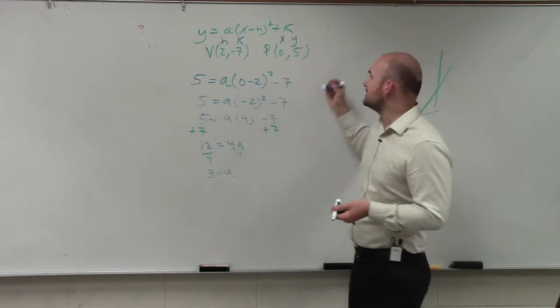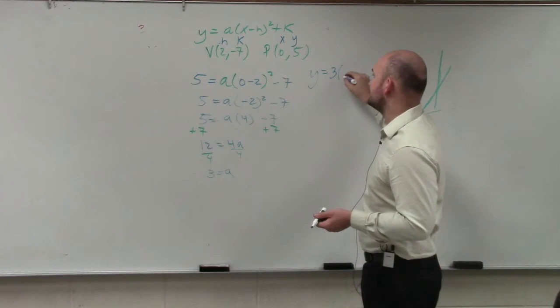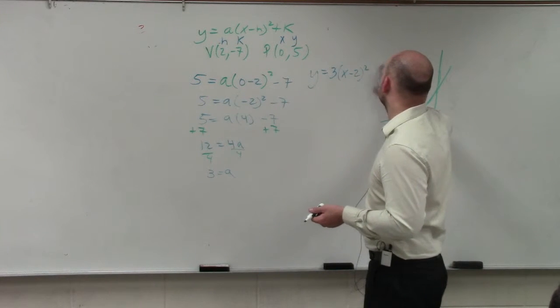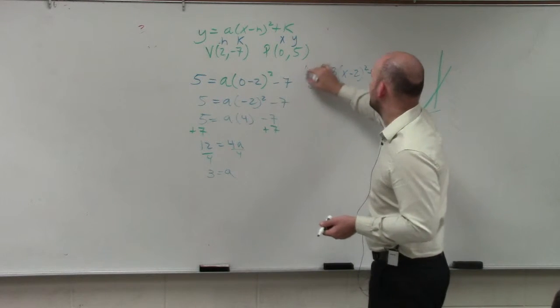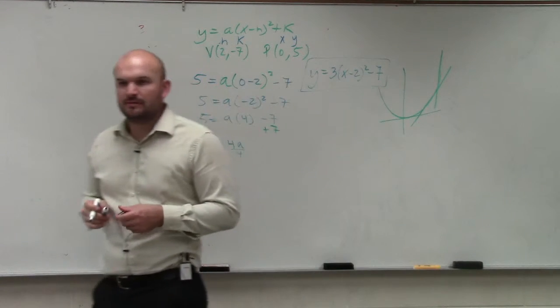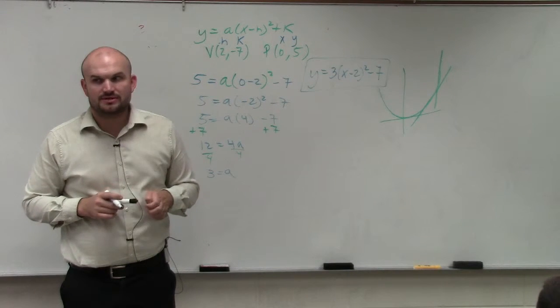And then I just leave my x and y as part of my equation. So I'd have y equals 3 times x minus 2 squared minus 7. And that would be it. Anybody have any questions to that? Ask questions now.